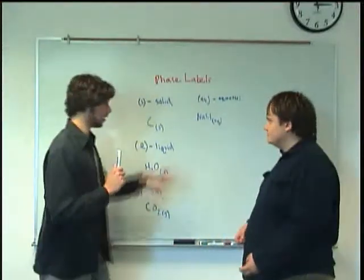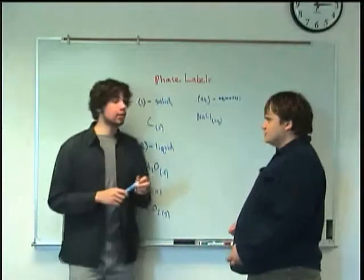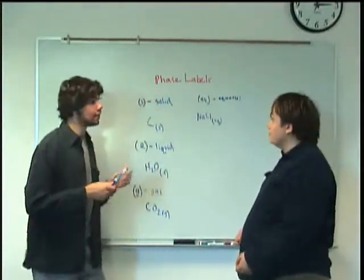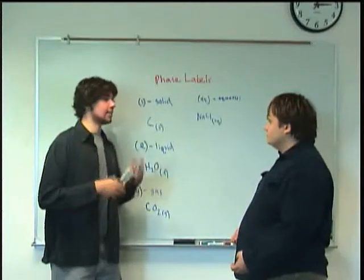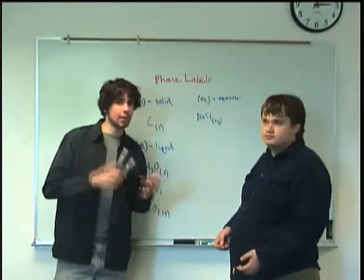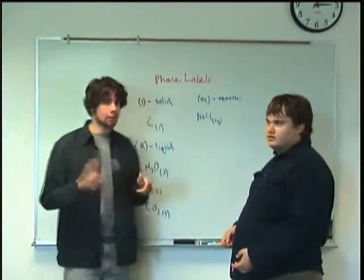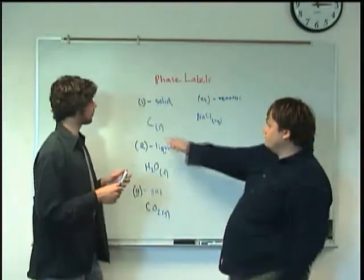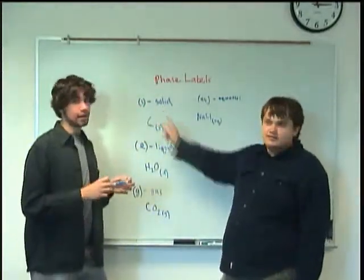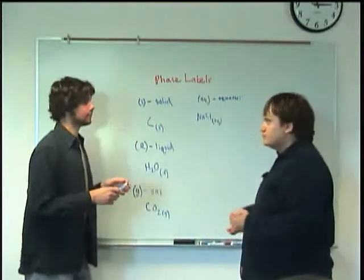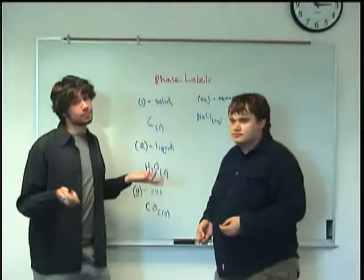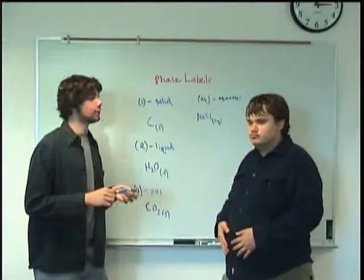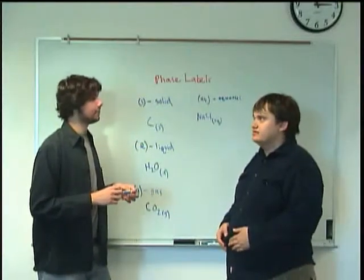When dealing with aqueous labels, you'll be using your solubility rules quite a bit. If something exists as aqueous, it dissolves in water — meaning it's soluble. So you may want to review your solubility rules. And if something isn't soluble, it would be solid. For example, lead oxide would be labeled as a solid.